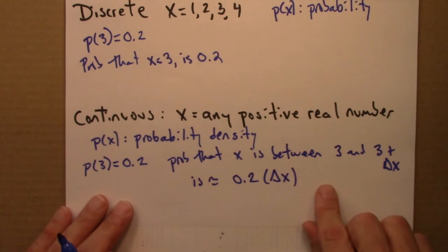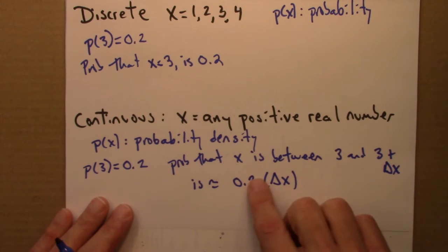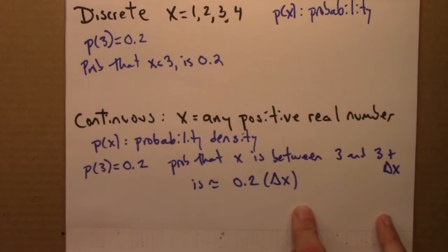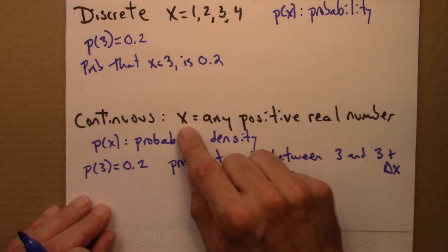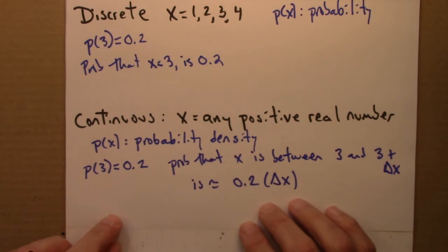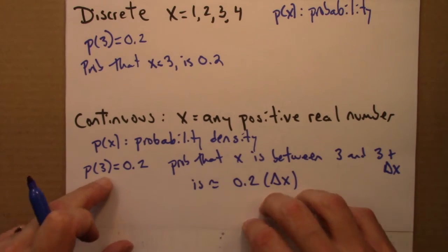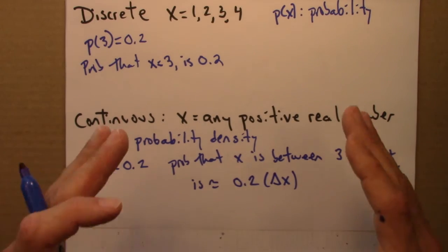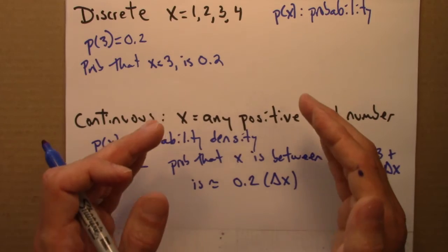So that's a mouthful, and if you haven't seen it before, that might look a little weird. But the idea is that when x is continuous and can take on any value, we don't want to talk about x being exactly, exactly 3. We want to say, well, what fraction of the values of x are in a certain range around x equals 3?